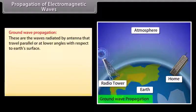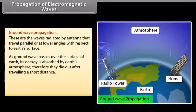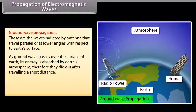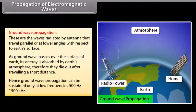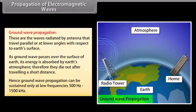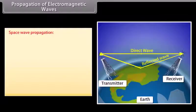Ground waves are radiated by antennae that travel parallel or at lower angles with respect to Earth's surface. As a ground wave passes over the surface of Earth, its energy is absorbed by the Earth's atmosphere, so they die out after traveling a short distance. Hence, ground wave propagation can be sustained only at low frequencies: 500 hertz to 1500 kilohertz.